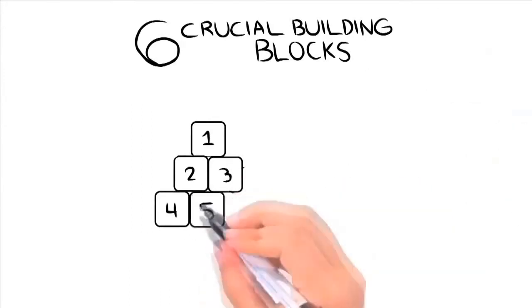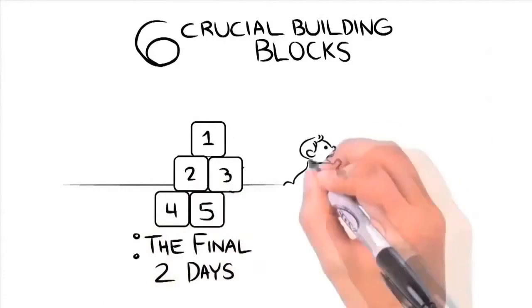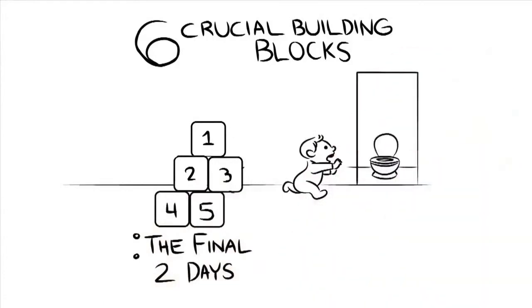Building block number five takes you over the final two days as I give away the mandatory motivational tactics that'll have your child running to the potty on their own each and every time they have to go. Using just two or three of the methods I give to you in this section will make things click in your child's mind halfway through the second day.